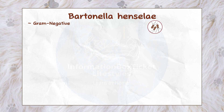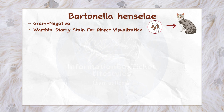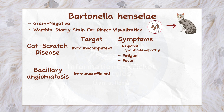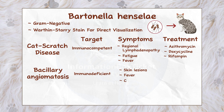To summarize: Bartonella henselae is a gram-negative bacterium found in cats, viewable using a Warthin-Starry stain. It causes cat scratch disease (CSD) in immunocompetent people and bacillary angiomatosis in immunodeficient people. Cat scratch disease symptoms include regional lymphadenopathy, tiredness, and fever; medications such as azithromycin, doxycycline, and rifampin can be utilized. Bacillary angiomatosis causes skin lesions, fever, chills, exhaustion, and weight loss, and is treated with erythromycin, doxycycline, or tetracycline.